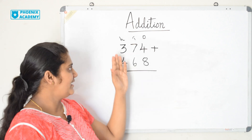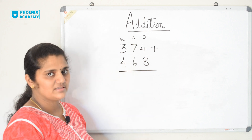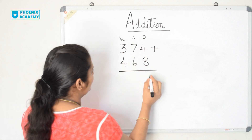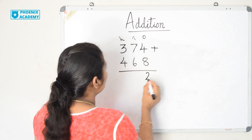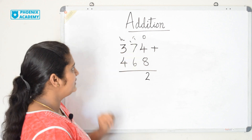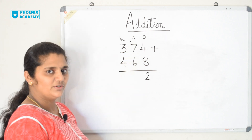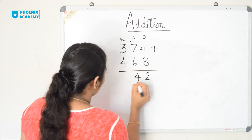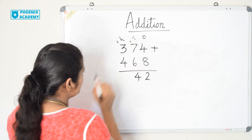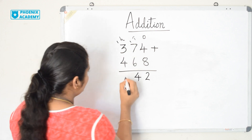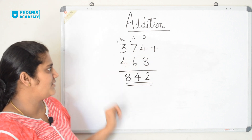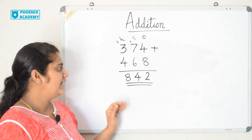Let us add 374 plus 468. 4 plus 8 is 12, so we write 2 in the ones place and carry 1 to the tens place. Add tens: 1 plus 7 is 8, plus 6 is 14. Carry 1 to the hundreds place. Add hundreds: 1 plus 3 is 4, plus 4 is 8. So the sum of 374 plus 468 is 842.